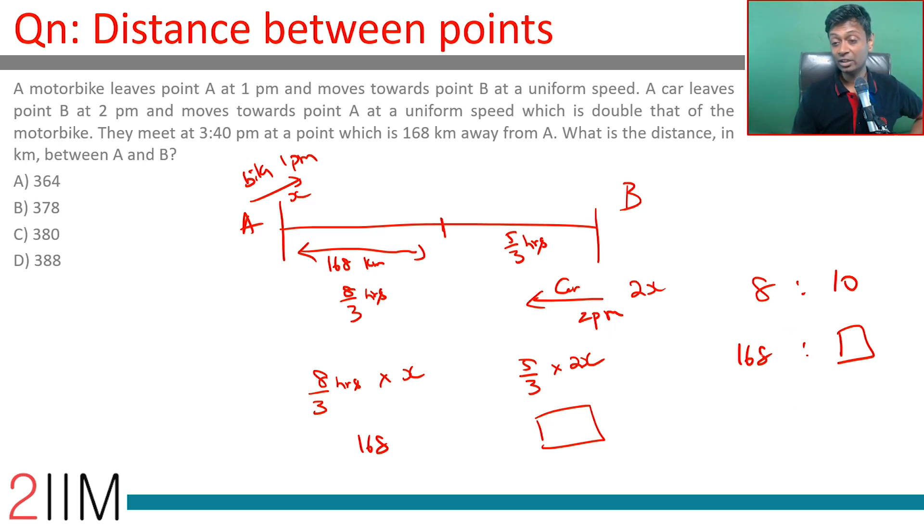168 by 4 is 84 by 2, which is 42. 42 times 5 is 210. So this is 168 kilometers and this is 210 kilometers. The total distance between A and B is 168 plus 210, which is 378 kilometers.